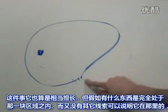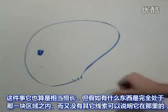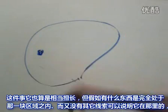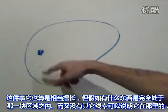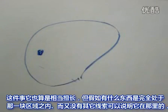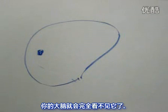The brain is pretty good at that. But if there's something entirely contained in that blind area, and there's no clue that anything is going through it, your brain won't see anything at all.